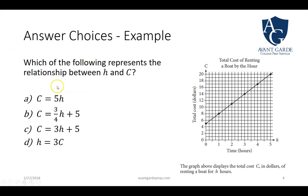For example, here we can see that we got a graph and it says which of the following represents the relationship between h and c. I can see that I have a graph with a line charted across it. I can look at the answer choices and see I'm developing a linear equation that's going to be in the slope intercept form, which is y equals mx plus b.